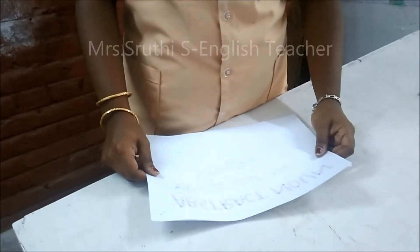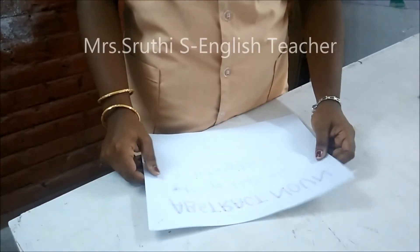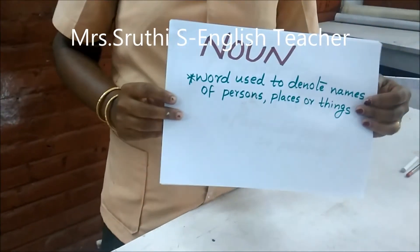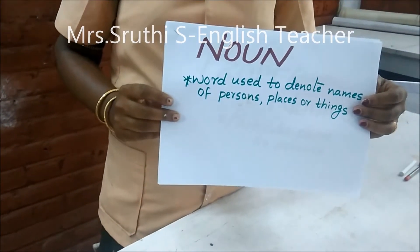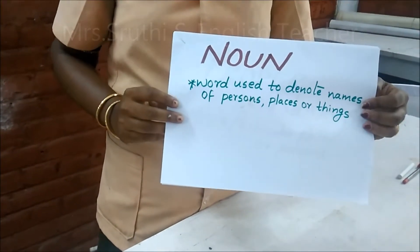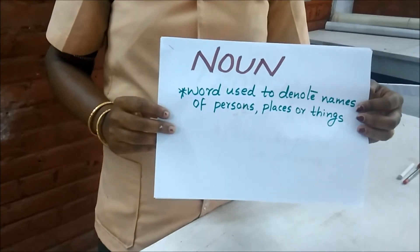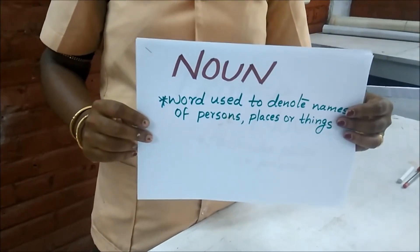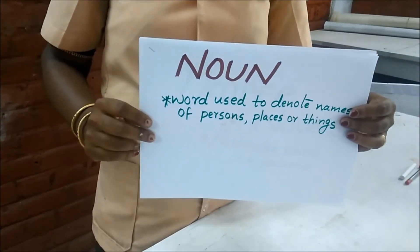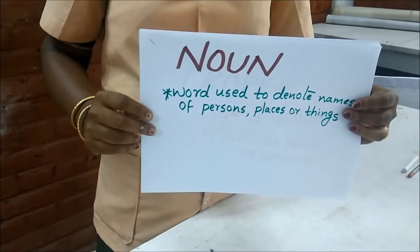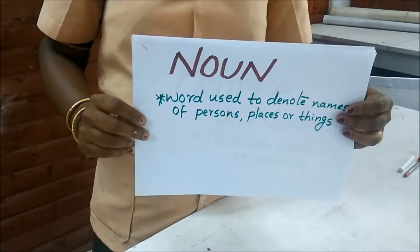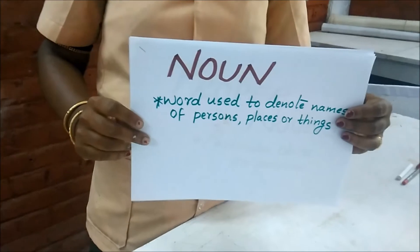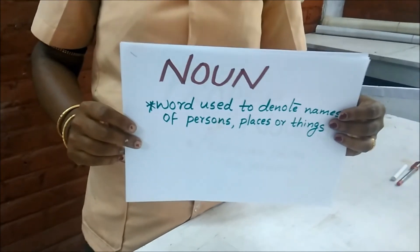We will deal with the concept of nouns. Nouns are words that denote the names of persons, places, or things. For example, 'he is a good boy' and 'this city is the city of London.' In these sentences we can see nouns.